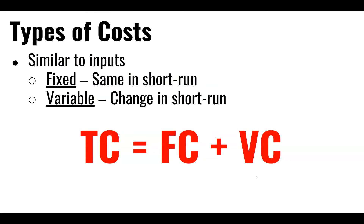Our costs are similar to our inputs — we have both fixed costs and variable costs. Fixed costs don't change during the short run; there is something that cannot be changed, so we're in the short run. Fixed costs exist in the short run. In the long run, nothing is fixed and everything is variable, so fixed costs would be zero.